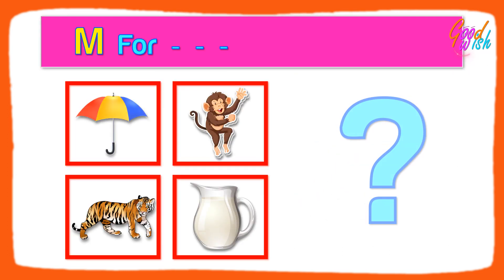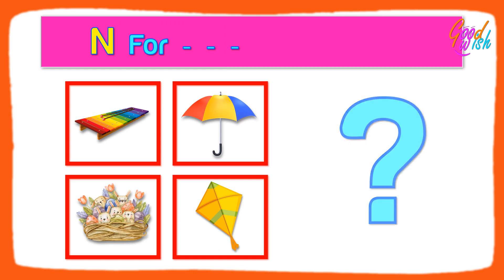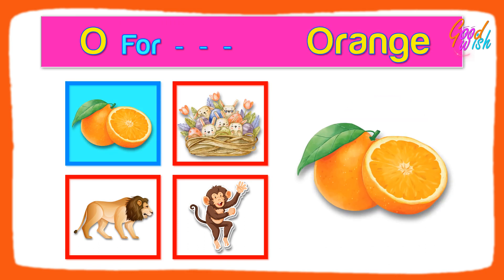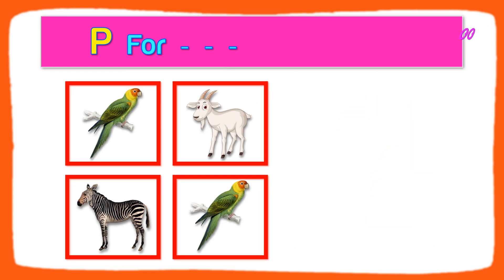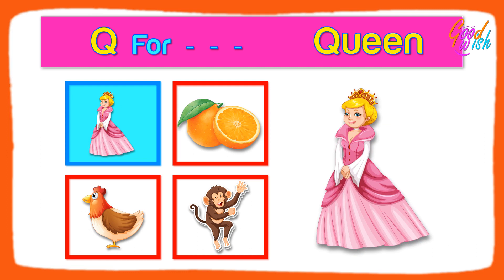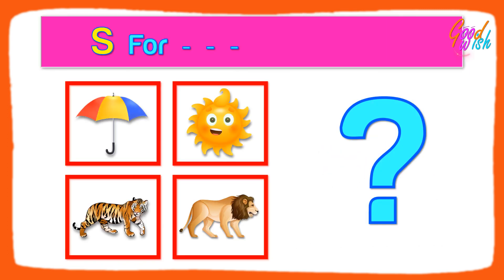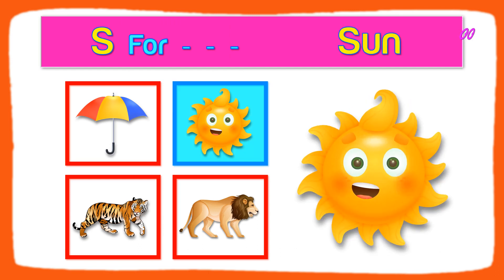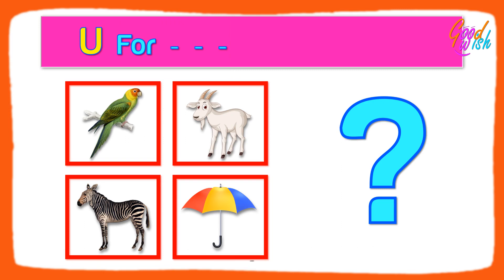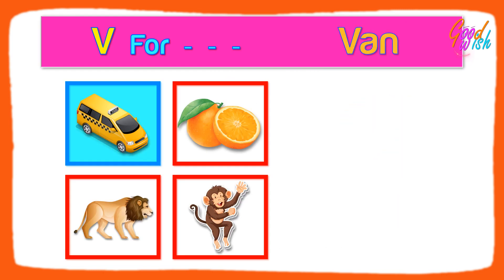M for Monkey, N for Nist, O for Orange, P for Parrot, Q for Queen, R for Red, S for Sun, T for Tiger, U for Amrella, V for Ben.